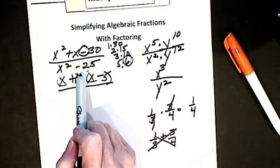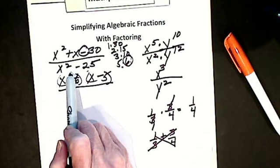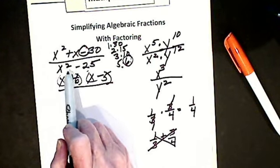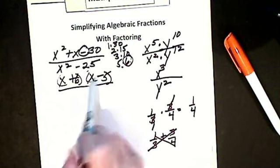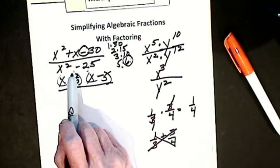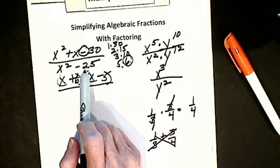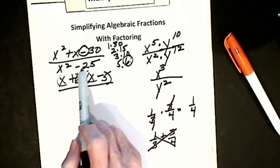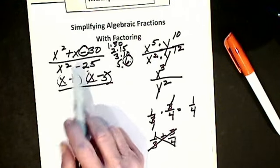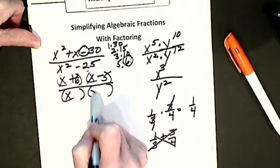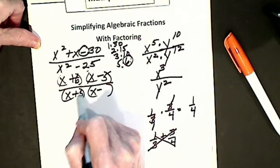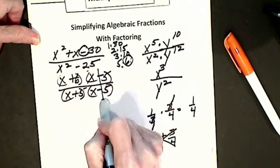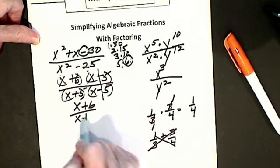I look at my denominator and ask myself: is it greatest common factor, difference of two squares, or a trinomial? It's not a trinomial — tri means 3, and I only have two terms. So I ask: could it be greatest common factor or difference of two squares? There's no common x and no common number. Yes — it is difference of two squares. I factor it: I get x and x with different signs, and I take the square root of 25, which is 5 and 5. Now I've got all factors, so I can cancel. Anything divided by itself is 1. I am left with x plus 6 divided by x plus 5.